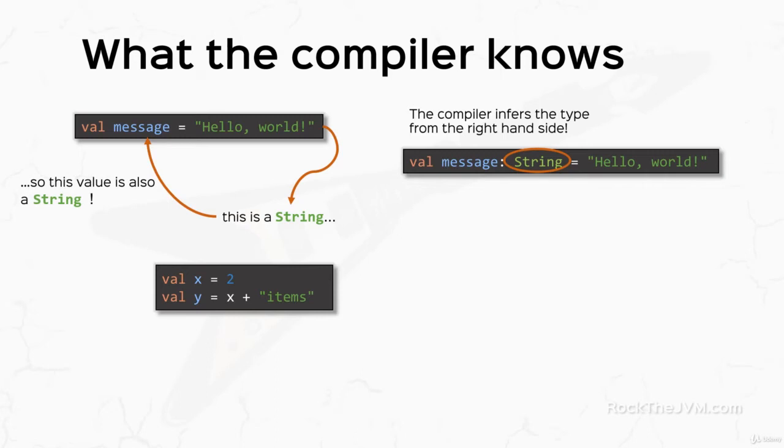So for the value x, the compiler is able to figure out that it's an int from the right-hand side, and for the value y, having determined the type of x first, it will look at the right-hand side and will say, int plus a string, well, that is a string concatenation, so the result is a string, so the type of y is also a string.